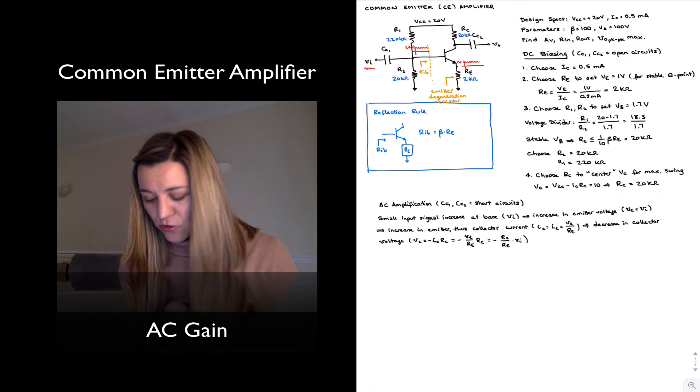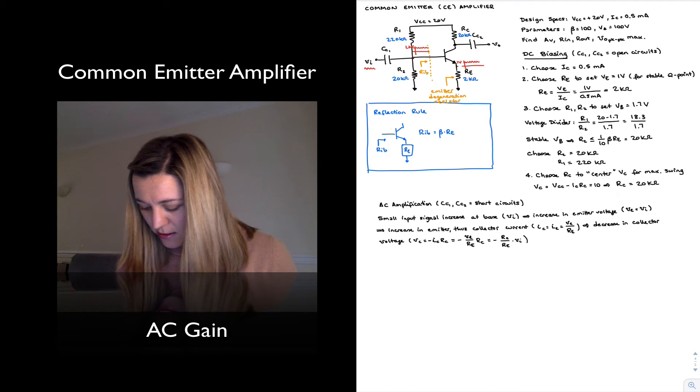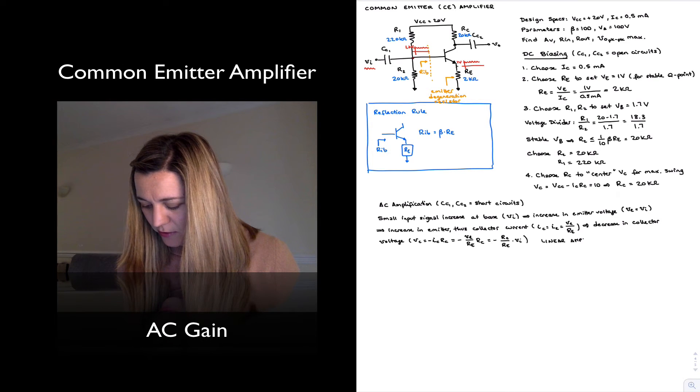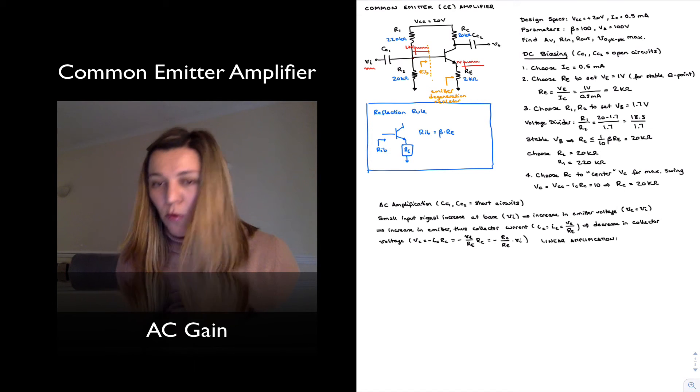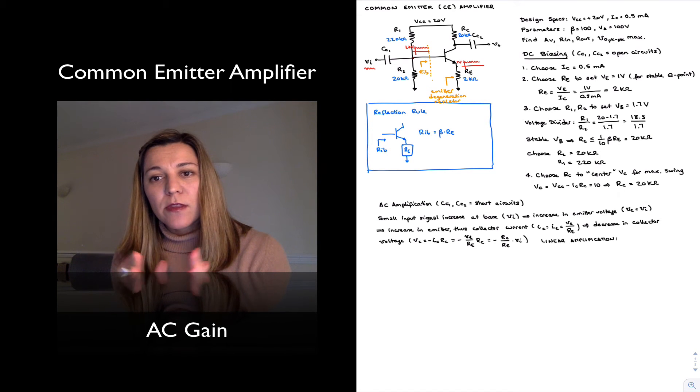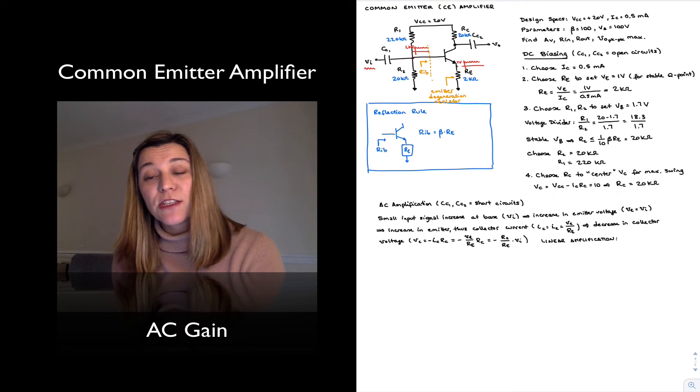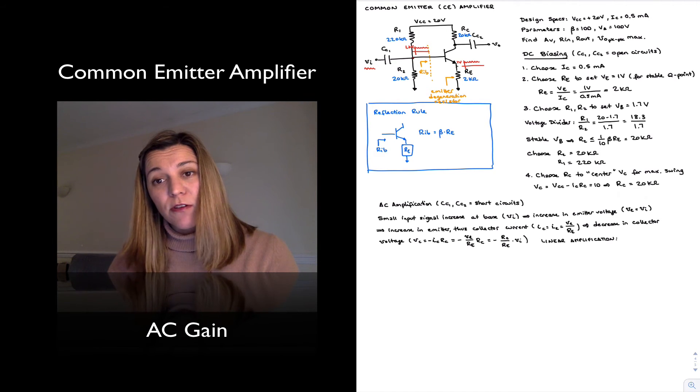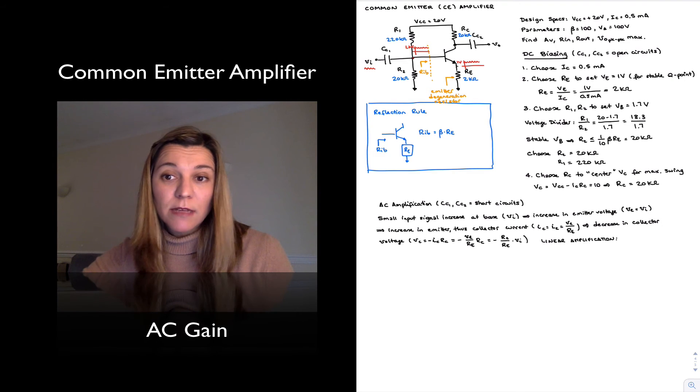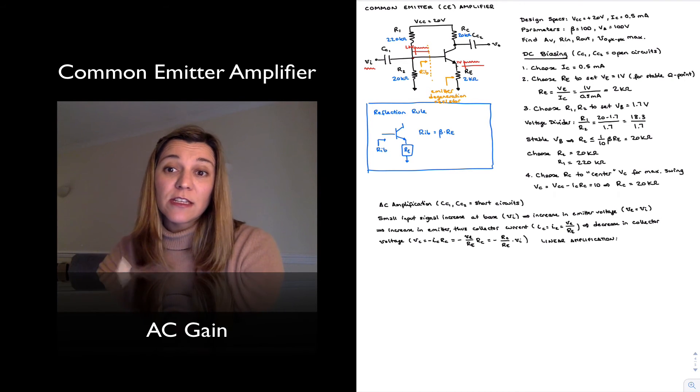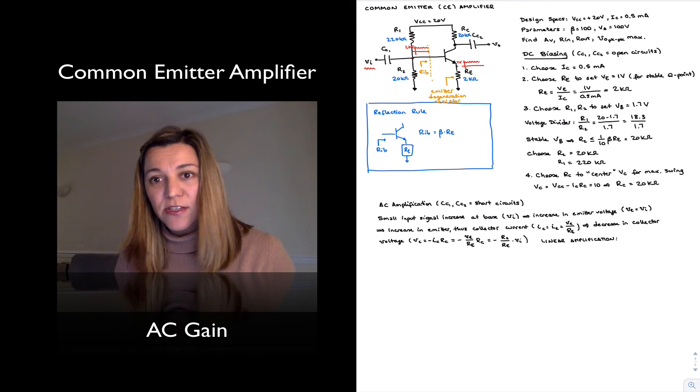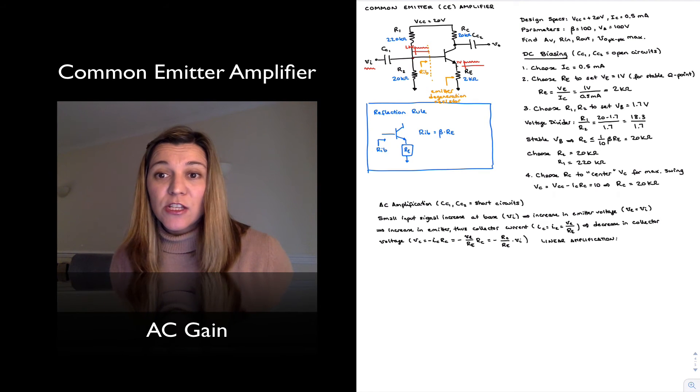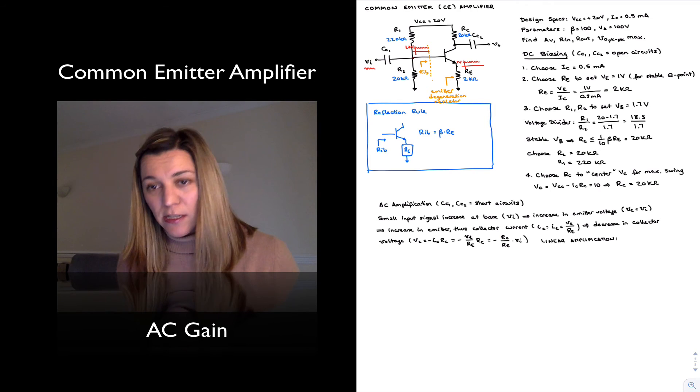And VE can also be written as VIN, is equal in magnitude to the delta VIN. So I can rewrite this as negative RC over RE times VIN. And so I have just come up with an expression of the delta in output voltage in terms of the delta in input voltage. And so what I basically have here is linear amplification, right? I have a circuit where a change in input voltage produces a change in output voltage.